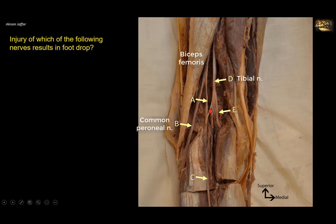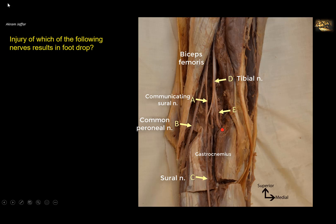The tibial nerve supplies a branch which unites with another branch from the common peroneal to form the sural nerve on the posterior aspect of the leg. Look at the sural nerve here, superficial to gastrocnemius muscle. These are the two heads of gastrocnemius. The sural nerve, as it arises from the tibial nerve, receives a communicating branch — called the communicating sural — from the common fibular or common peroneal nerve. E is a muscular branch, one of the branches that supplies the muscles of the posterior compartment; in this case, a branch to the medial head of gastrocnemius.